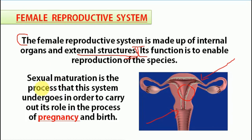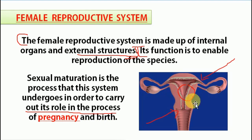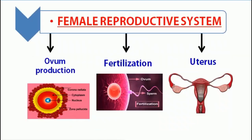Sexual maturation is the process that the system undergoes in order to carry out its role in the process of pregnancy and birth. The female reproductive system is the site of ovum production and fertilization.